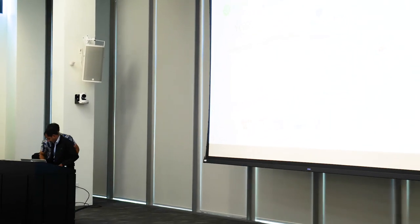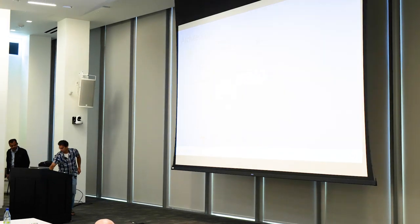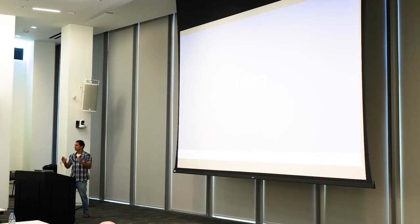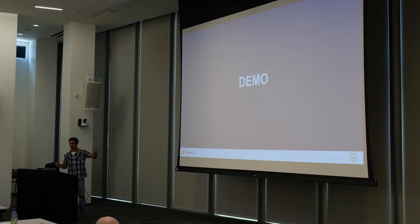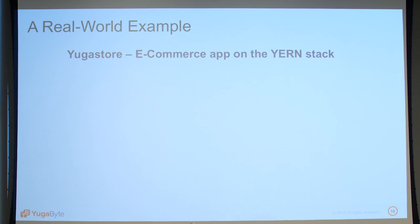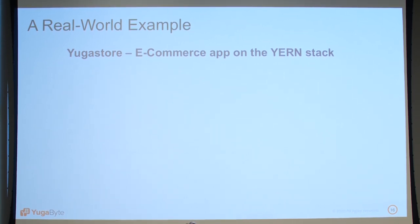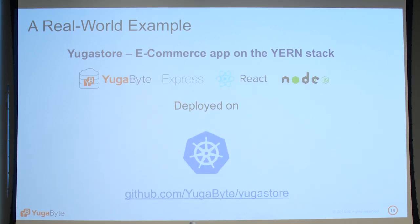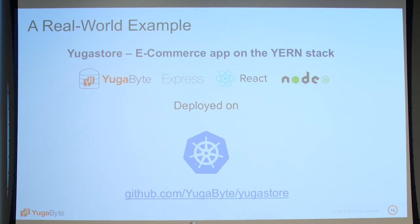We're going to switch laptops and look at the demo. Before we dive in, just a note on what we're looking at: a real e-commerce application built on the YERN stack — YugaByte, Express, and Node.js for the REST API layer, and React as the UI. React, Express, Node.js, and a database is a pretty popular stack.